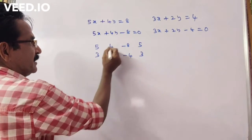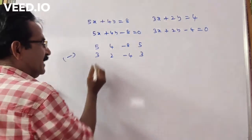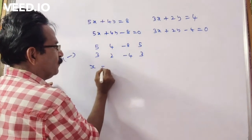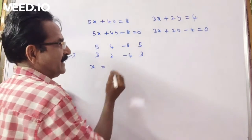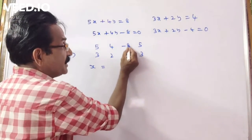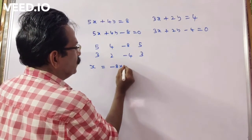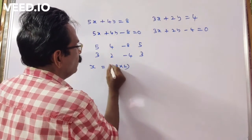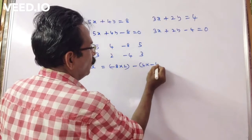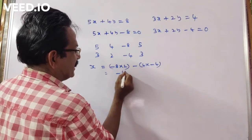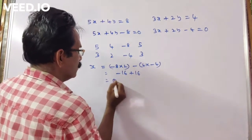Since it is negative, this cross product minus this cross product gives us the x numerator. Minus 8 into 2 minus minus 4 into 4 is equal to minus 16 plus 16, which equals 0.